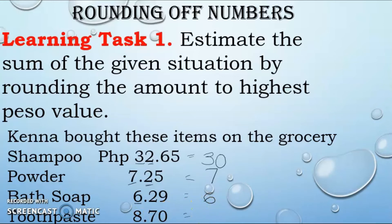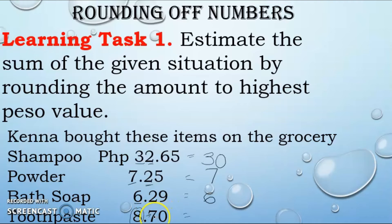For 8 pesos and 70 centavos, 8 pesos is our rounding place and the digit to the right is 7. Since 7 is more than 5, we add 1: 8 plus 1 becomes 9. So that will become 9 pesos.